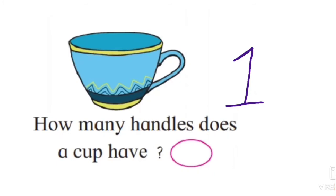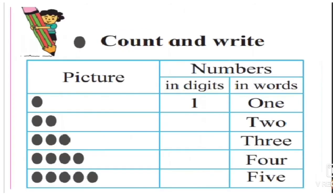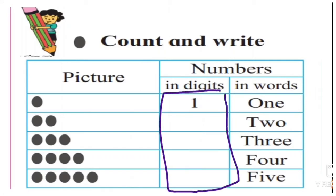Dear students, practice writing numbers from one to nine. In this box, you are given pictures — you have to count the pictures and write the digits in these boxes. And in this box, you have to read the given numbers written in words. Let's start.